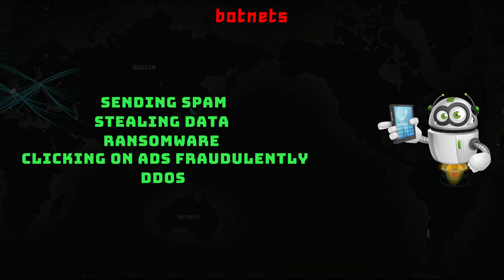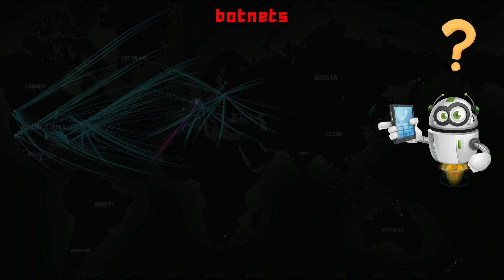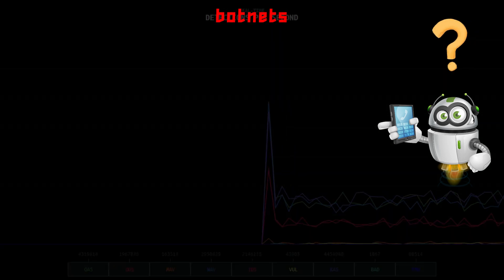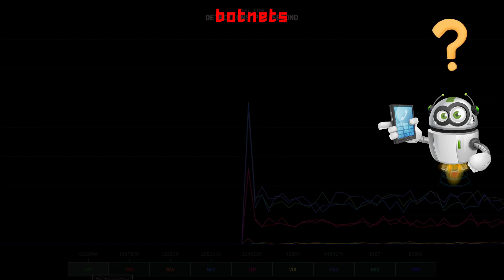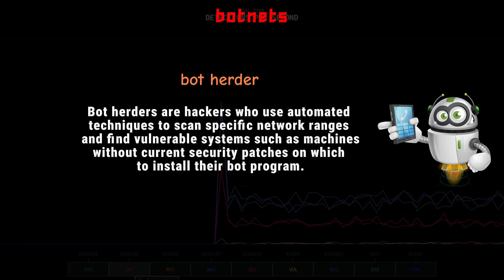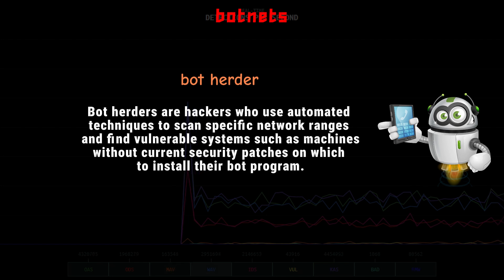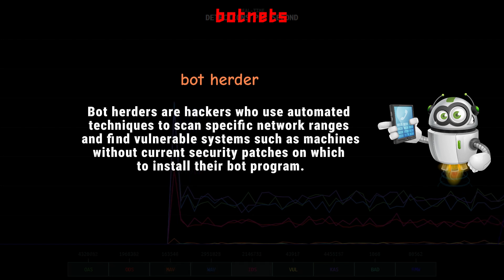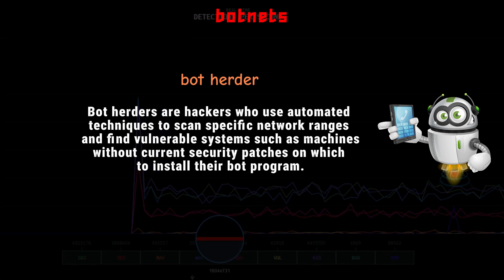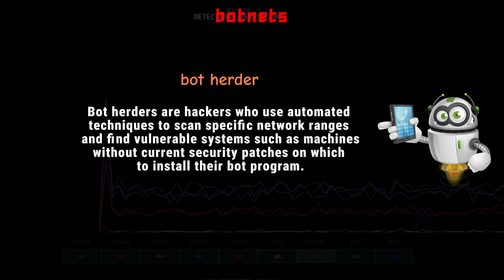Built on the client-server model, botnets are networks of computers infected by malware that are under the control of a single threat actor known as the bot herder. The bot herder relies on a command and control server (C2) to administrate the bots, and since the infected computers are under the control of the C2, a botnet infection is like having a malicious hacker inside your network.